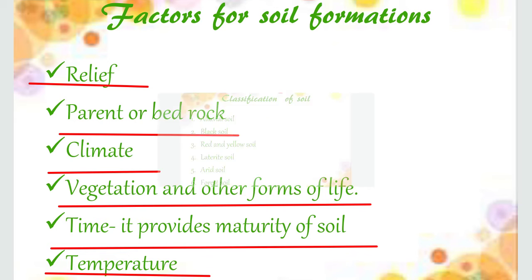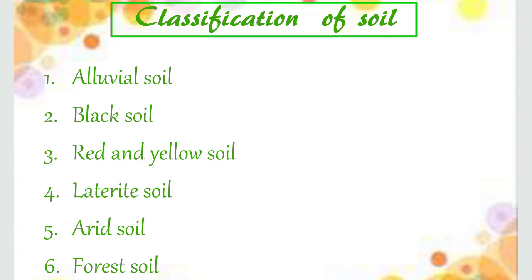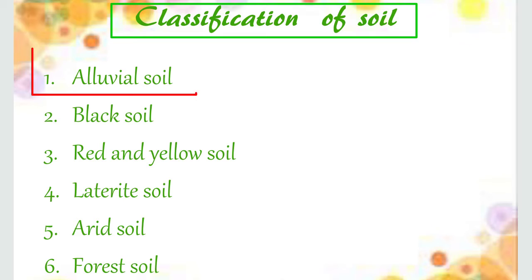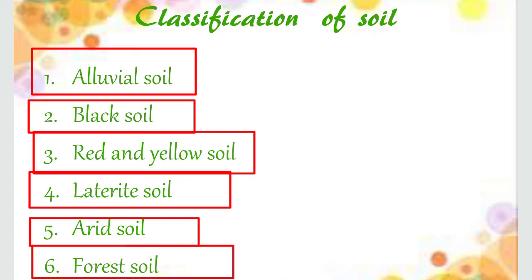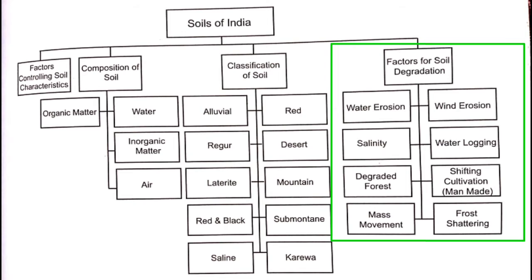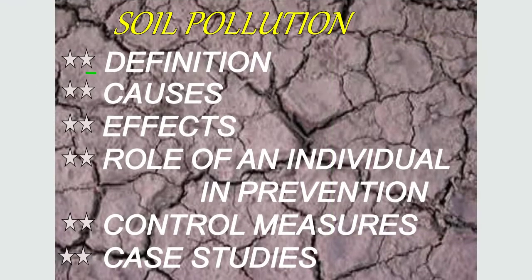We will also discuss classification of soil, including alluvial soil, black soil, red and yellow soil, laterite soil, arid soil, and forest soil. Then we will discuss factors for soil degradation, including water erosion, wind erosion, salinity, water logging, degraded forest, shifting cultivation, and mass movement. Finally, we will discuss soil pollution — its causes, effects, role of individuals, prevention and control measures, and some case studies.